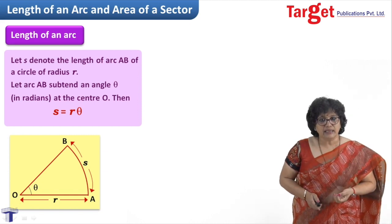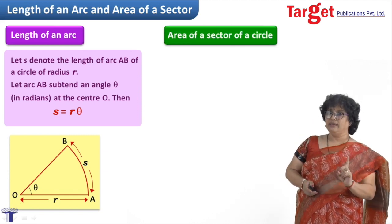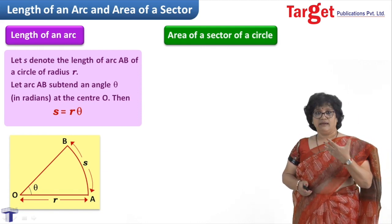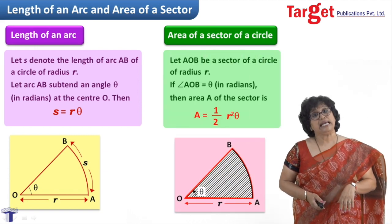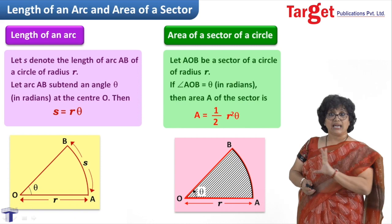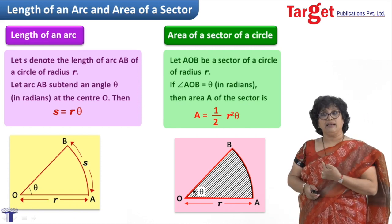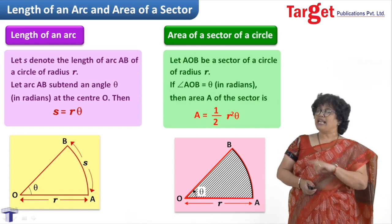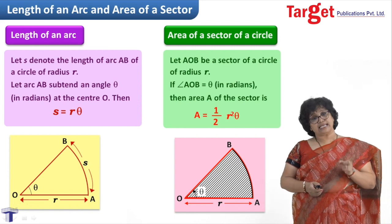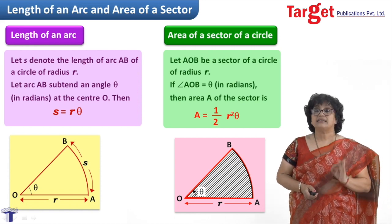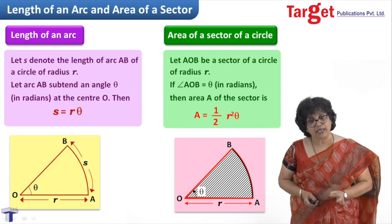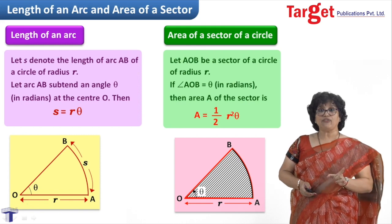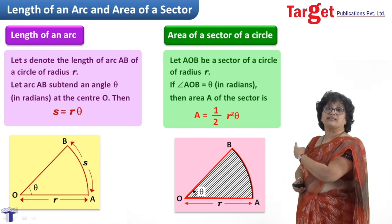Let us also take the area of a sector. You have done this in previous classes when the angle was in degrees; here we use radians. If AOB is a sector of radius r, then the area of the sector — the shaded part — is given as ½r²θ, where r is the radius and θ is the angle subtended by arc AB at the center O, and θ must be in radians. Both formulae — s = rθ and area = ½r²θ — are to be used only when the angle is in radians.